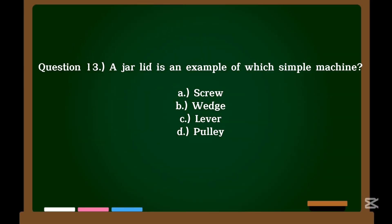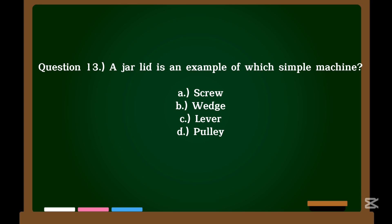Question 13. A jar lid is an example of which simple machine? A. Screw. B. Wedge. C. Lever. D. Pulley. Correct answer: A. Screw.